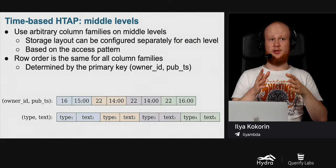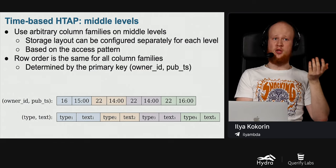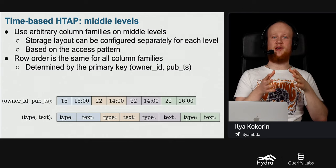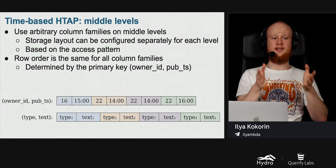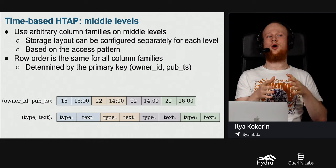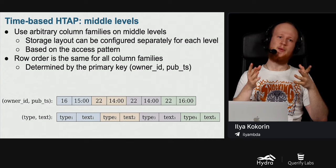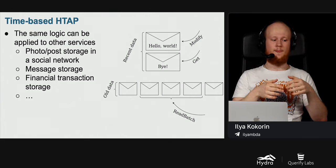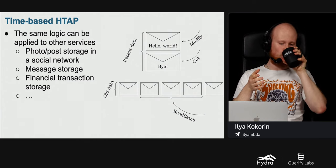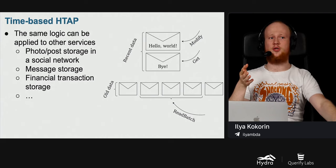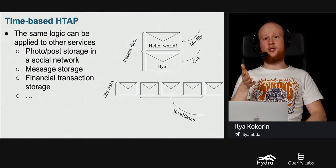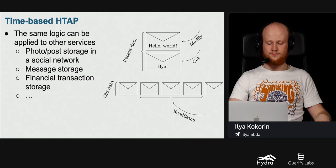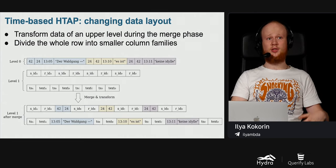For middle levels, we can use arbitrary column families, configuring the storage layout separately for each level based on the access pattern to that level. Row order is the same for all column families, determined by the primary key — owner ID and publication timestamp. The same logic applies to other services: photo or post storage in a social network, message storage, financial transaction storage. Recent data is modified and accessed via point queries, while older data is read in big batches — and the older the data, the bigger the batch.